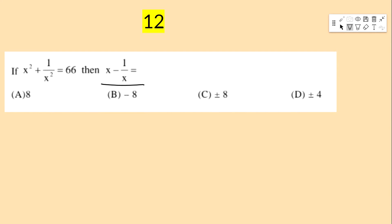Next bit: if x² + 1/x² = 66, then x − 1/x equals — options: 8, −8, ±8, ±4.